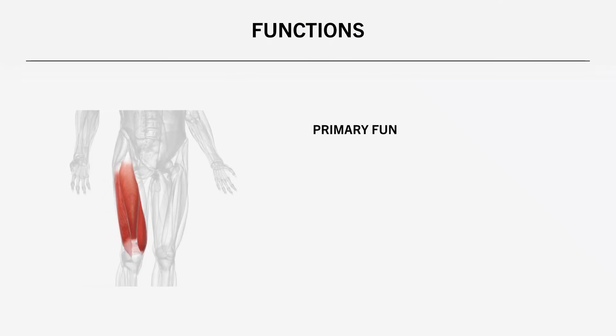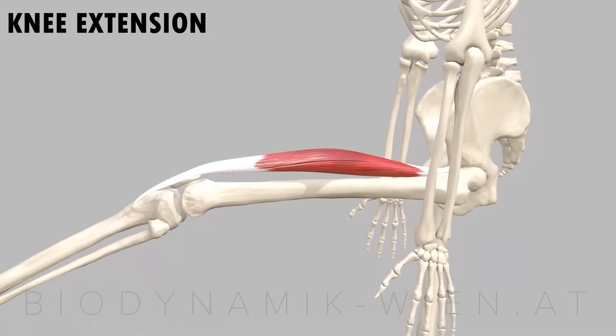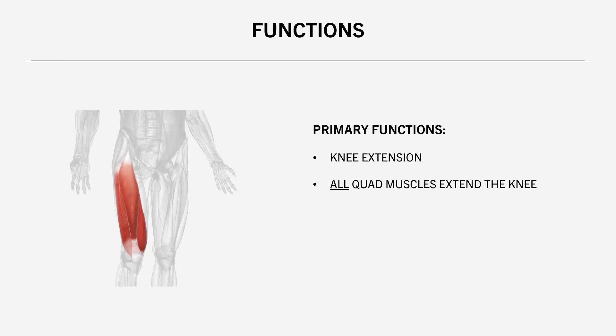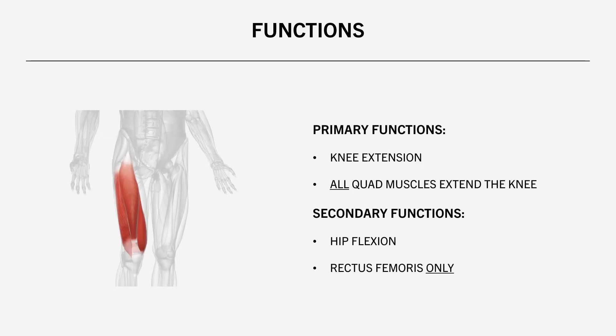Now let's discuss what functions the quadriceps muscles contribute to. The main function of the quad muscles is to extend the knee — the movement of kicking the knee out to straighten the leg. All four quad muscles perform knee extension, and this is the only role of the three vastus muscles. The other lesser function of the quads is to flex the hip, which is the movement of bringing the leg up towards the chest. Only the rectus femoris performs this action since it is the only quad muscle which attaches onto the pelvis.